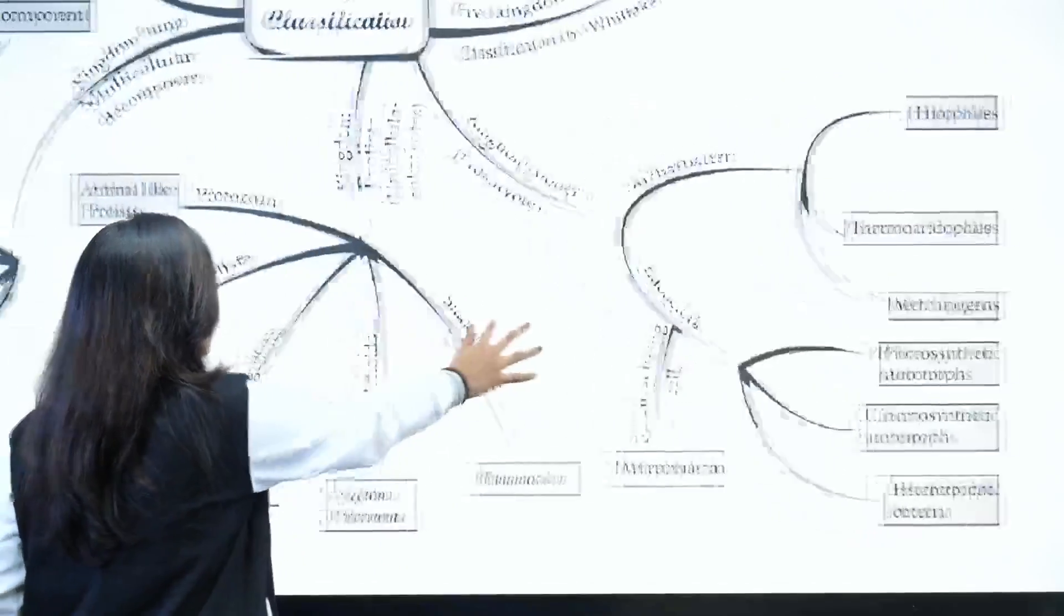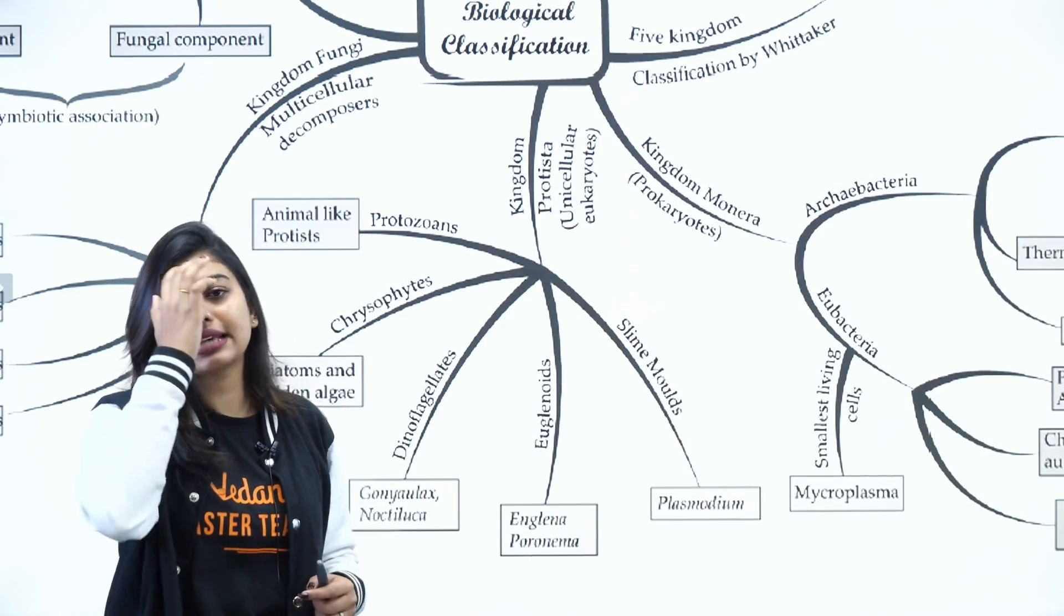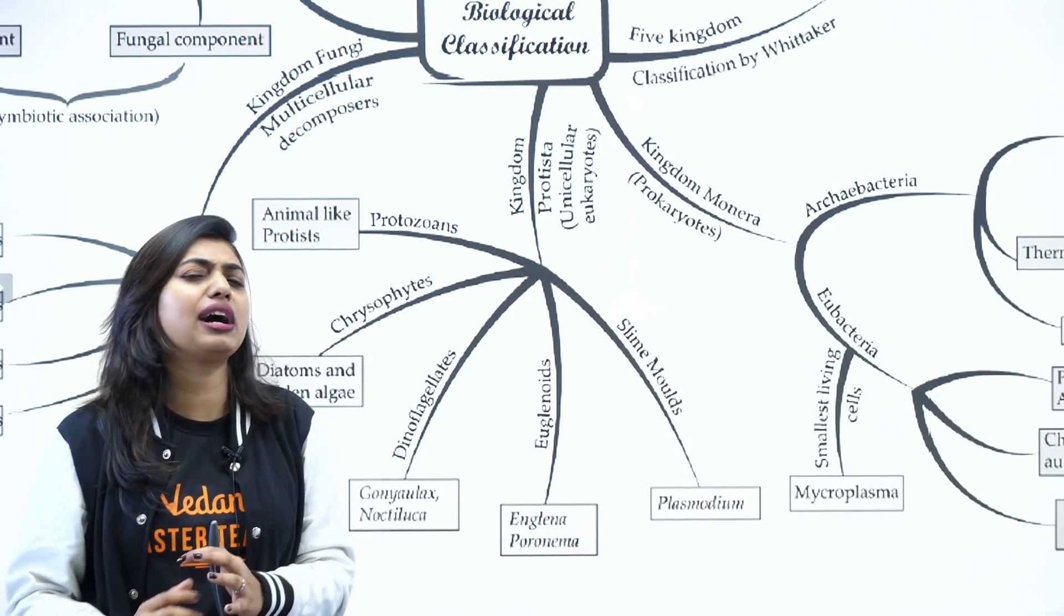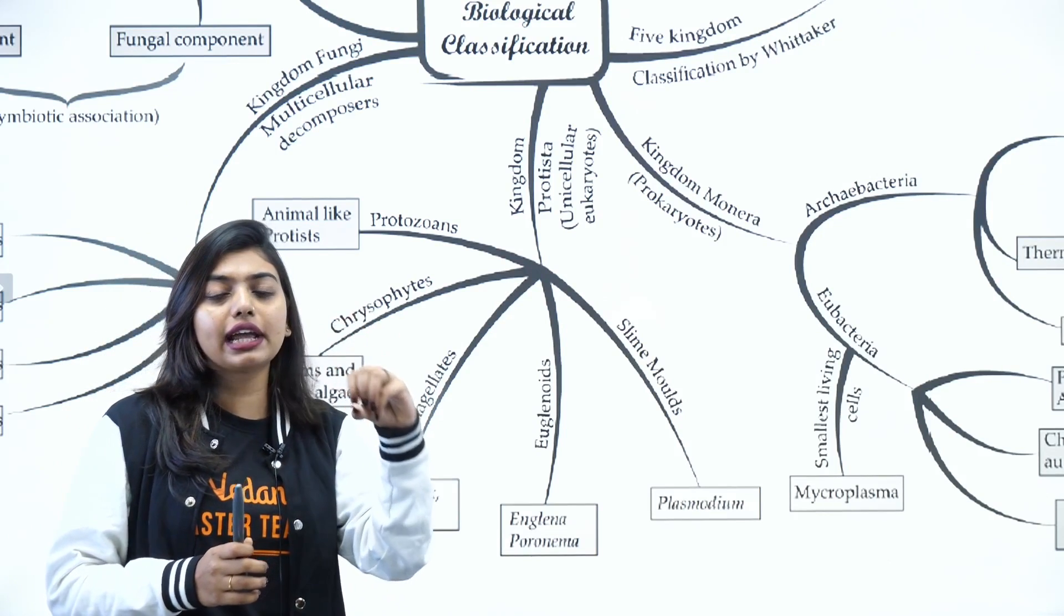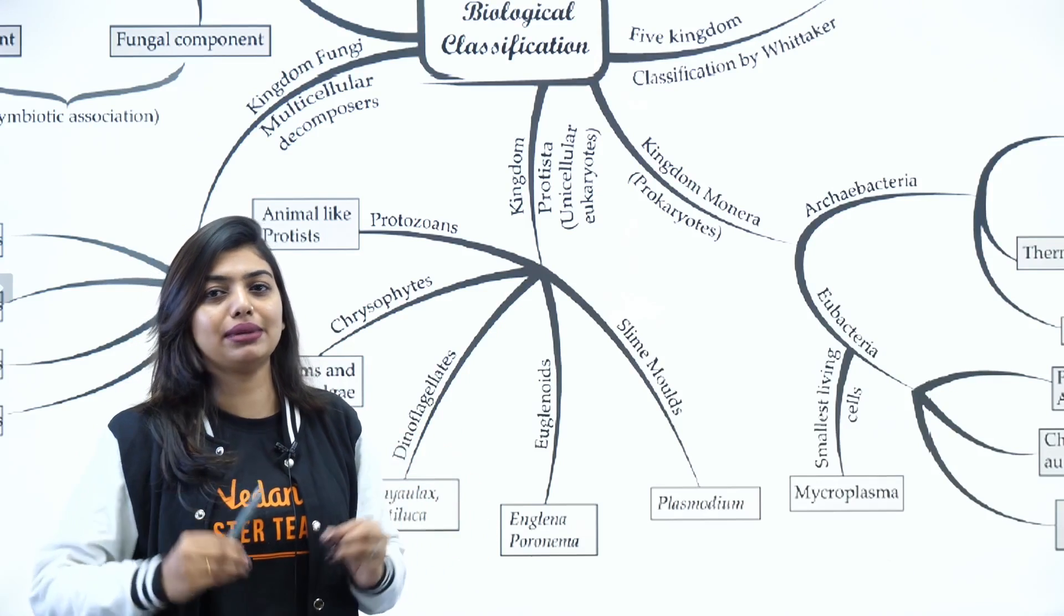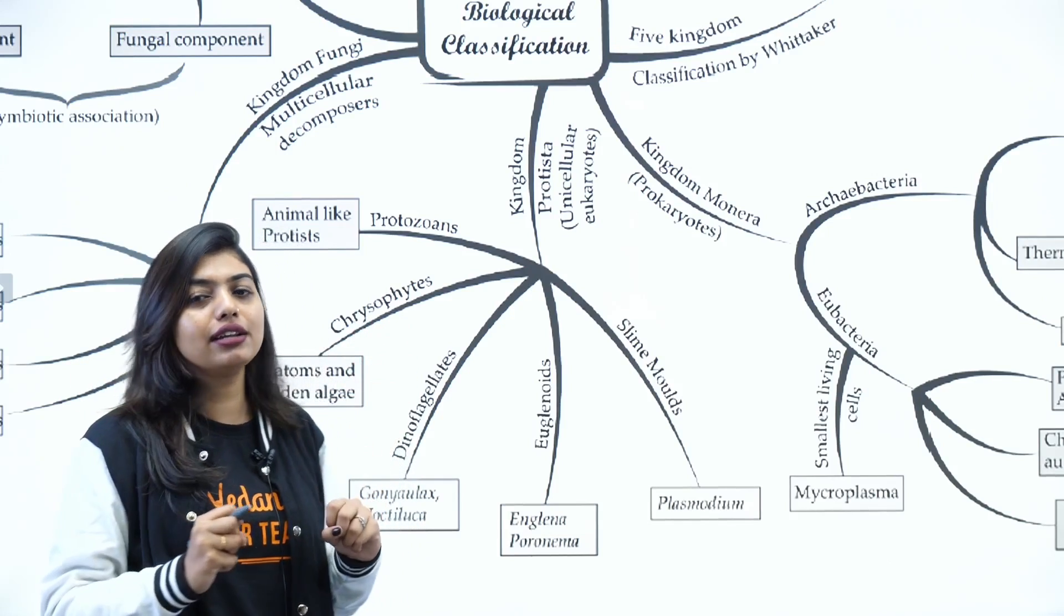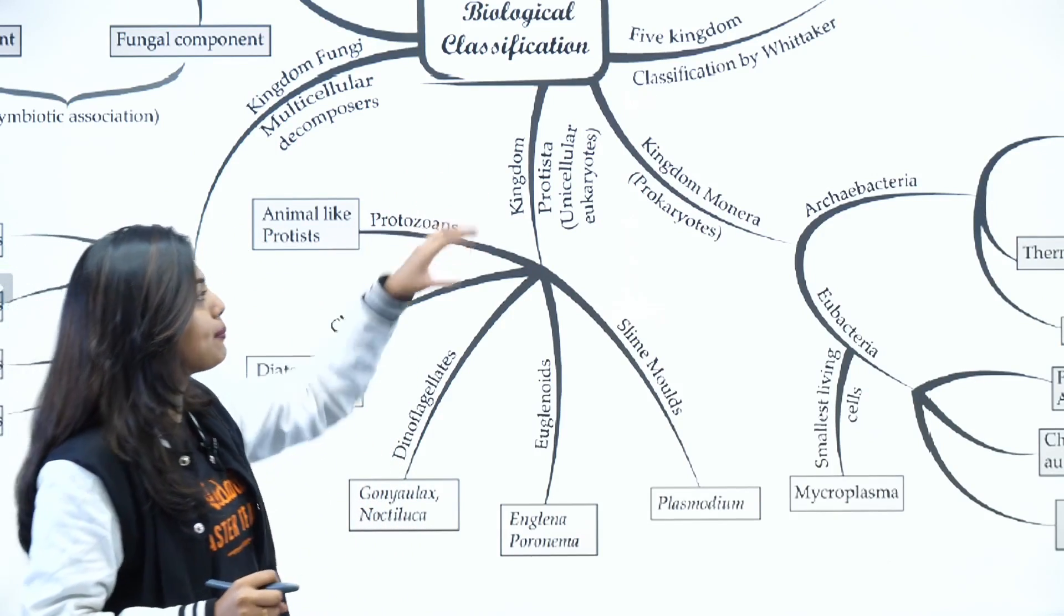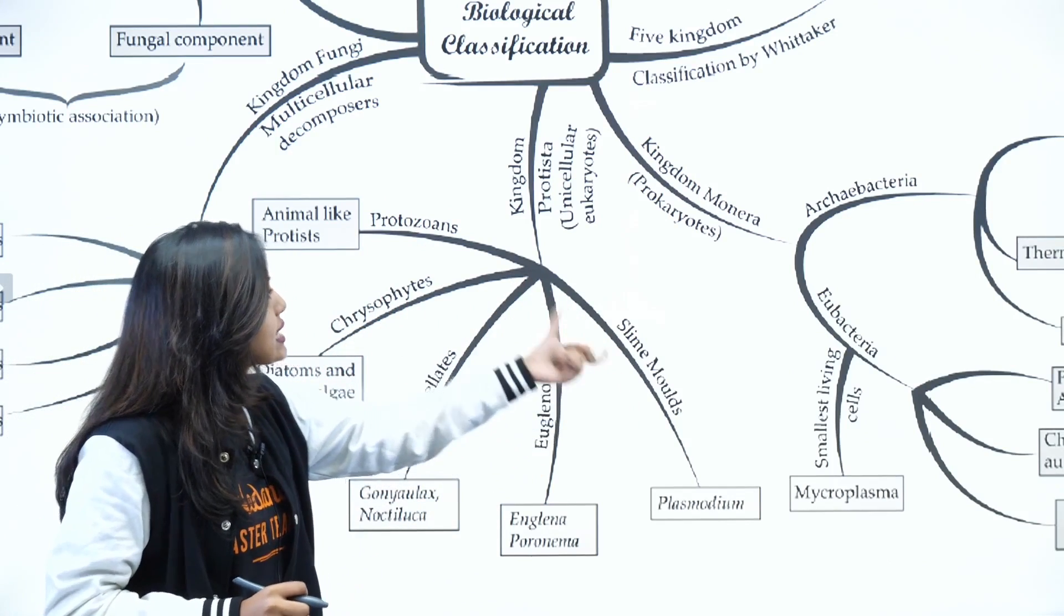When we come to Kingdom Protista, Kingdom Protista is considered as the link between animals, plants, and fungi. Why is this consideration done? Because some of them under Kingdom Protista have very plant-like nature, some of them have fungi-like, some of them have animal-like nature. So this is considered as a link between plants, animals, and fungi. Kingdom Protista is divided into Chrysophytes, Dinoflagellates, Euglenoids, Slime Molds, and Protozoans.